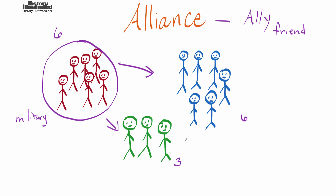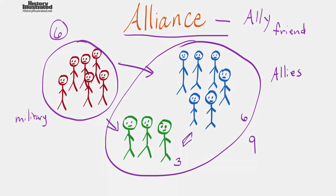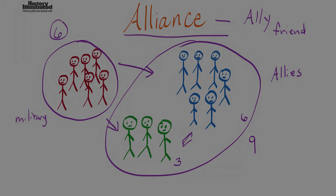The red group could beat either group up. But say the green and blue people — they're not best friends necessarily — they are more of an alliance. They've got together because they know that nine is stronger than six. So they have joined together, regardless of whether or not they're friends. They are now called allies, and they have an alliance, because they need to help each other out; otherwise the red group could take over and hurt them.